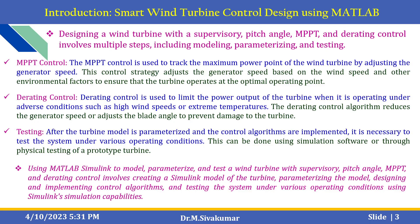The final one is the directing control. It is used to limit the power output of the turbine when it is operating under adverse conditions such as high wind speeds or extreme temperatures. The directing control algorithm reduces the generator speed or adjusts the blade angle to prevent damage to the turbine.